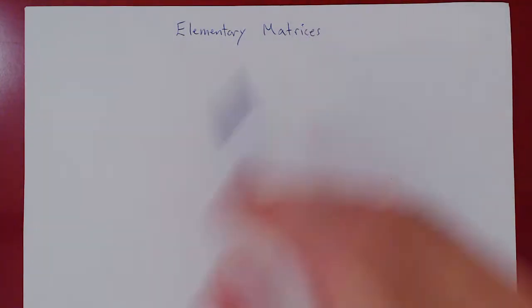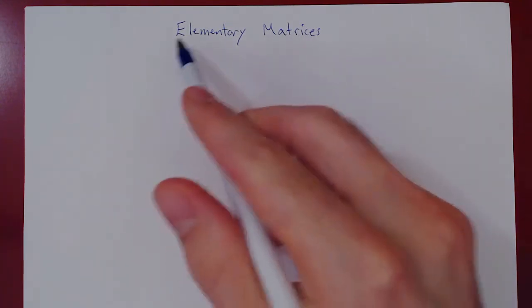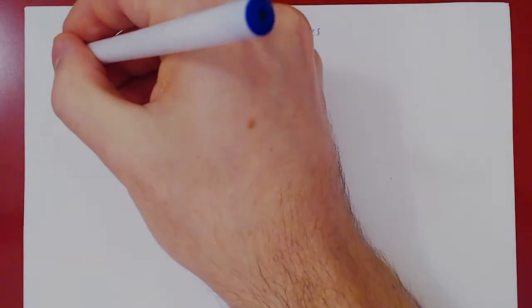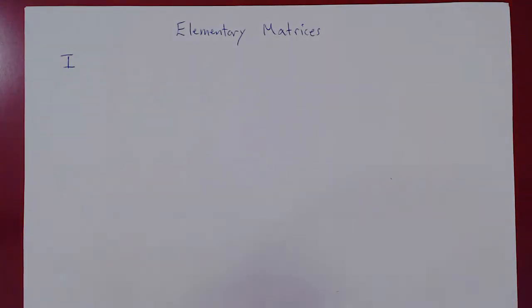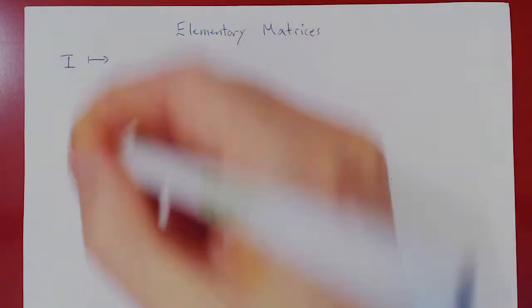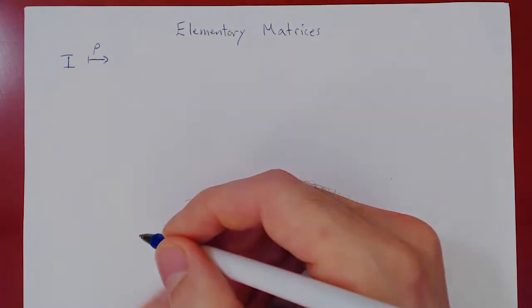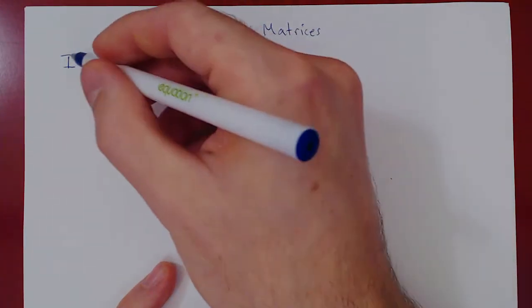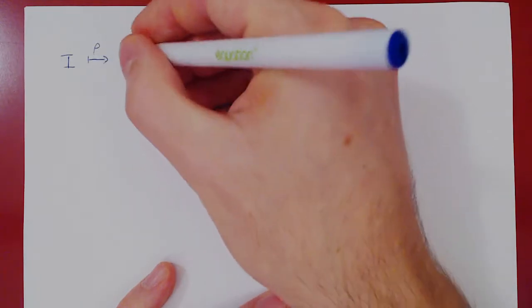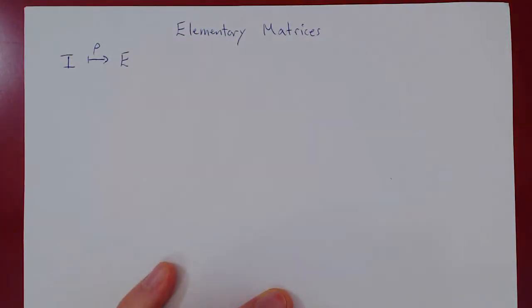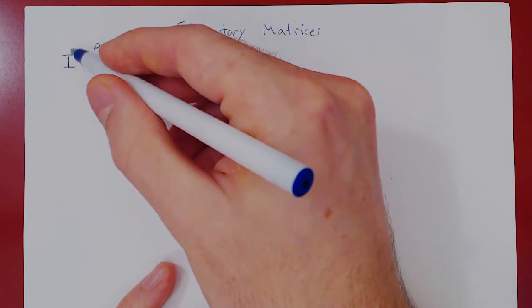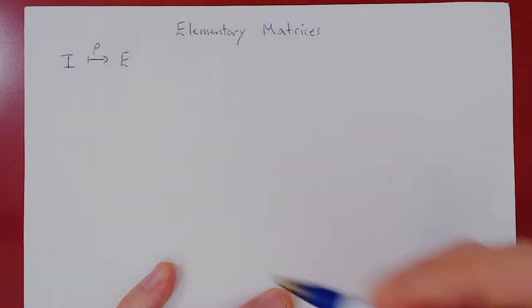This new concept is called elementary matrices. The word elementary means that they're rather simple matrices. Here's how you build them: start with I, the identity matrix, and apply to I a single row operation. If you apply to I a single row operation, you get a new matrix E, called an elementary matrix. An elementary matrix is a matrix that can be obtained from I by applying a single row operation.